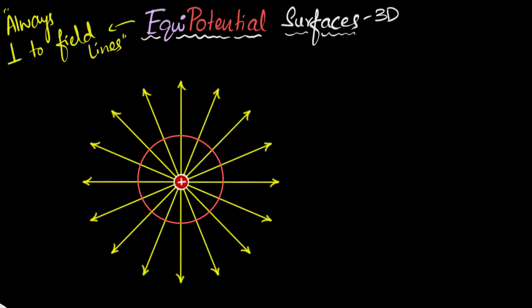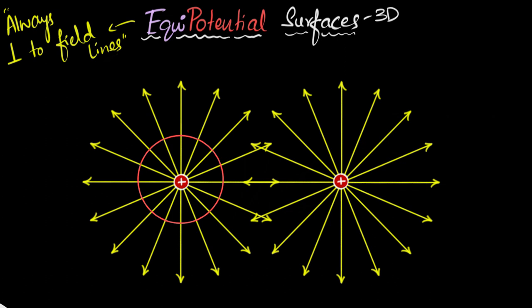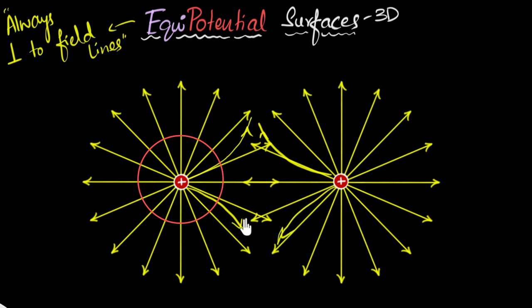Now let's bring in another positive charge. Our goal is to figure out logically, using this perpendicularity property, how the equipotential surfaces are going to change. If I bring in another charge over here, you know that its presence is going to change the field lines. The field lines are going to push on each other — some moving upwards, others moving downwards. Because the field lines change, and because the equipotential surface should always be perpendicular to the field lines, the equipotential surfaces are also going to change.